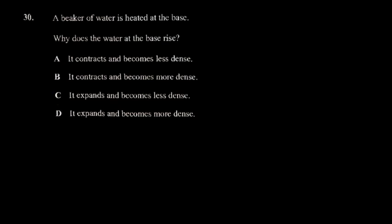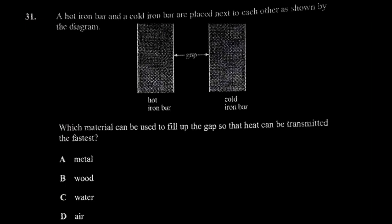Let's quickly move to question 31. A hot iron bar and a cold iron bar are placed next to each other as shown in the diagram. Which material can be used to fill up the gap so that heat can be transmitted the fastest? They are testing your knowledge of heat capacity - what materials are very good in terms of conducting heat. Obviously that would be metals.